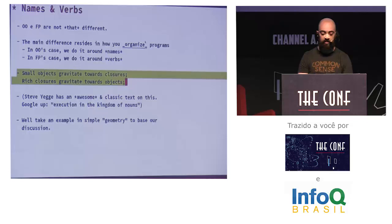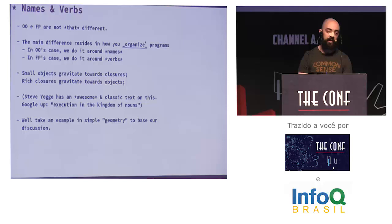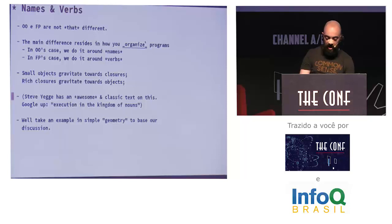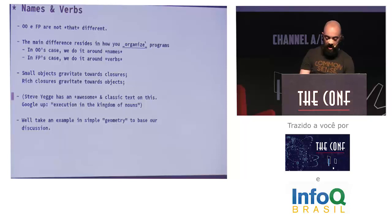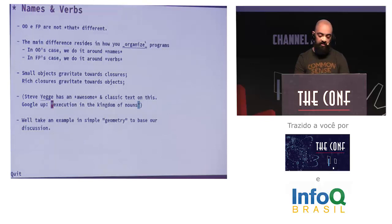There's a known thing that small objects gravitate toward closures. A closure is a behavior with attached data. Small objects — which are data with attached behavior — gravitate toward closures, and rich closures gravitate toward objects. If you have lots and lots of attached data, it looks like an object. There's an awesome classic text from Steve Yegge — he was at Amazon in Amazon's early days. You should Google 'Execution in the Kingdom of Nouns.' He makes lots of fun of Java and how names are more important than verbs. It's a very entertaining read.